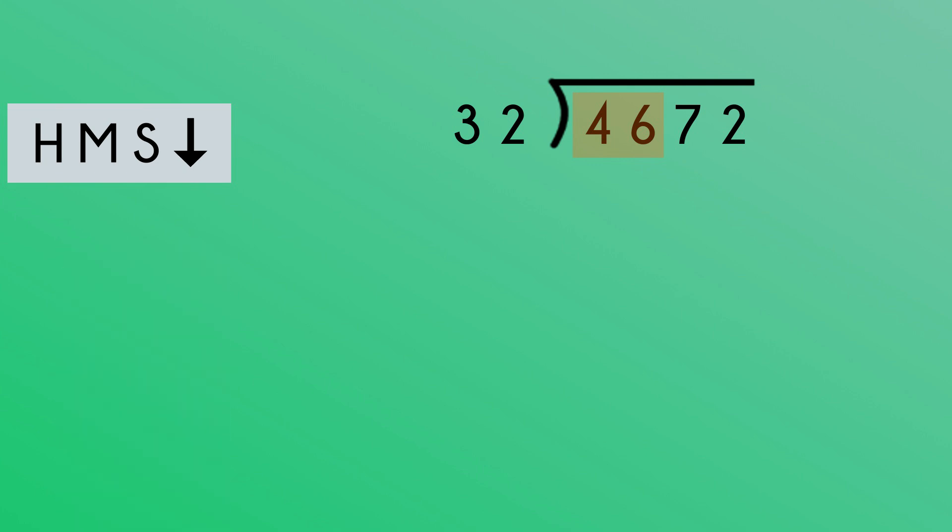Back to our problem. How many 32s in 46? I can see it's only going to fit once. We must write the 1 above the 6. This is because 32 didn't fit into 4 at all, so there would actually be a 0 above the 4.